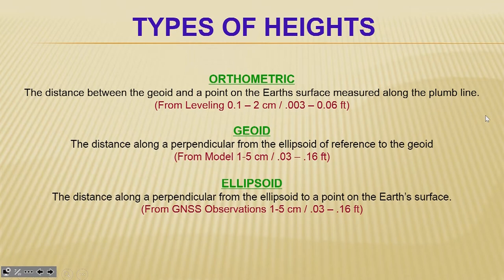Talking about vertical datums, you have to first start talking about heights — different types of heights. While there are a number of different types, we're only going to talk about the three most common: orthometric heights, geoid heights, and ellipsoid heights. Let's take a look, first of all, at orthometric heights.